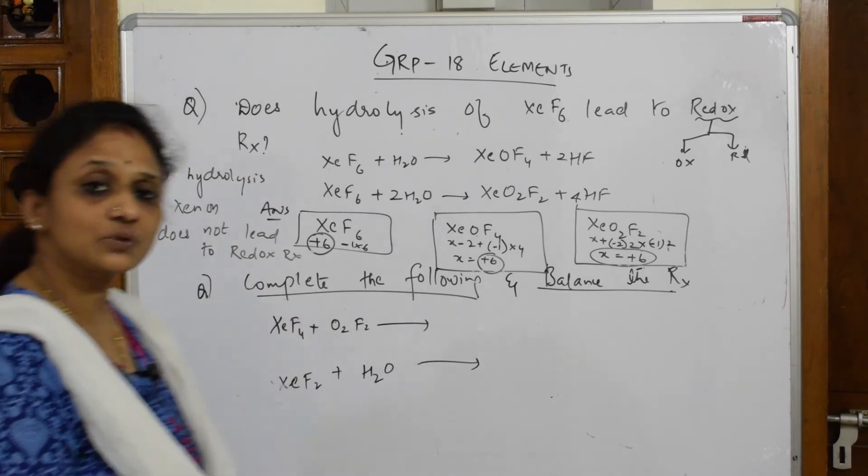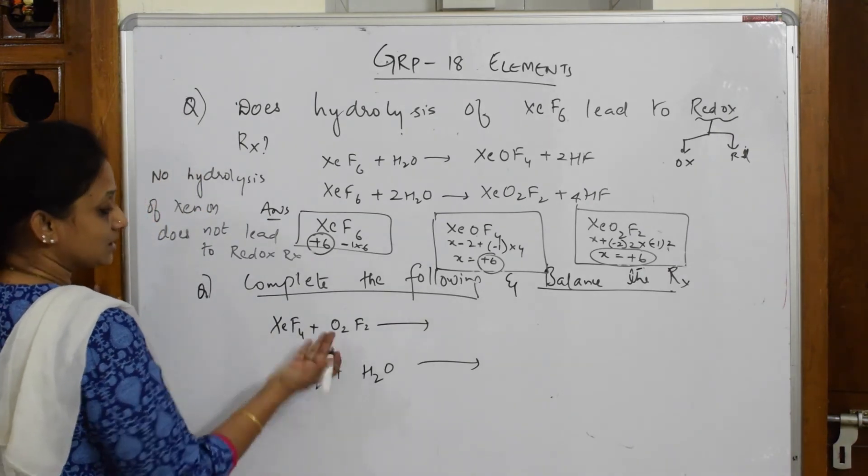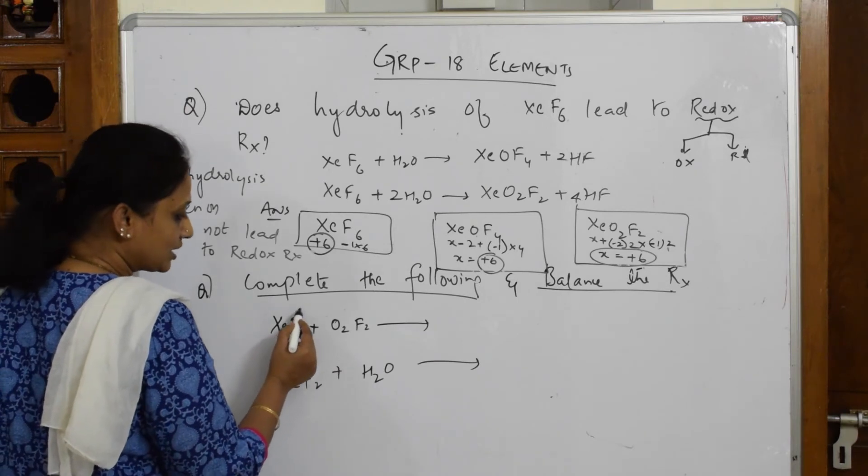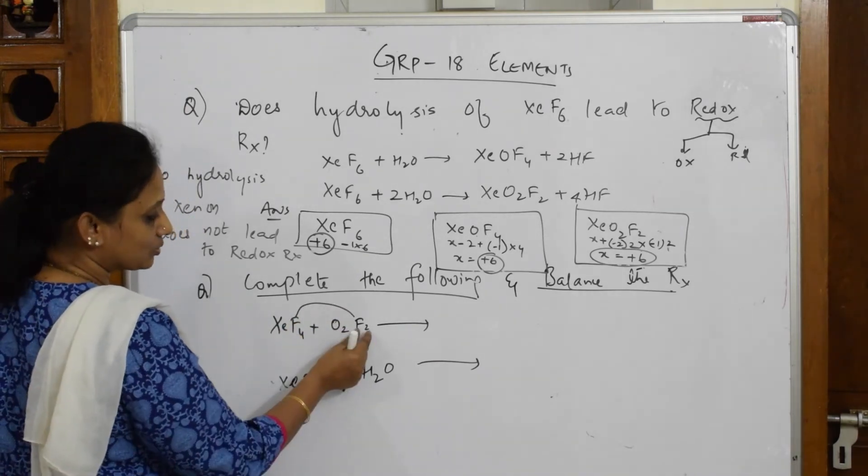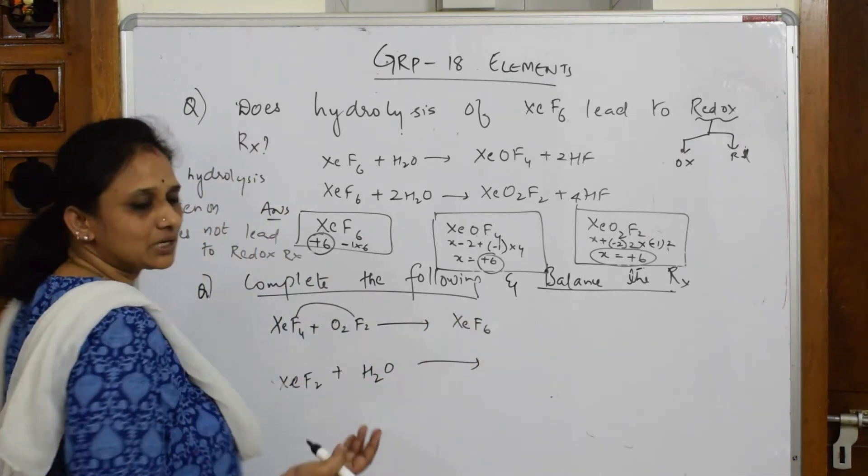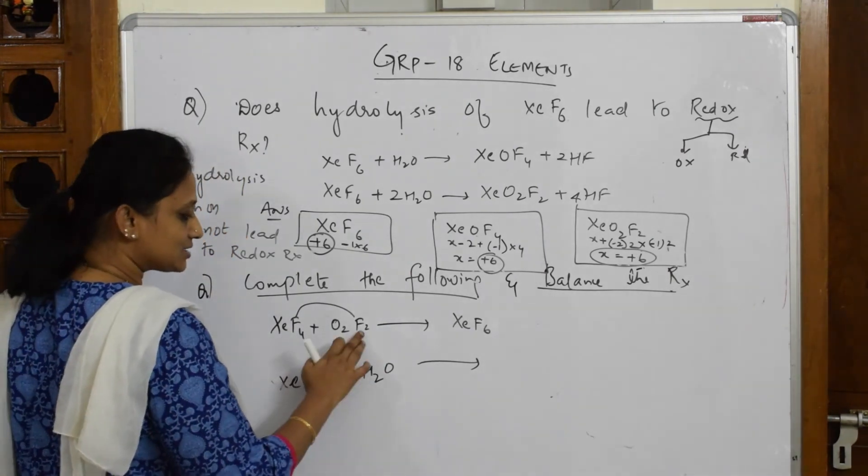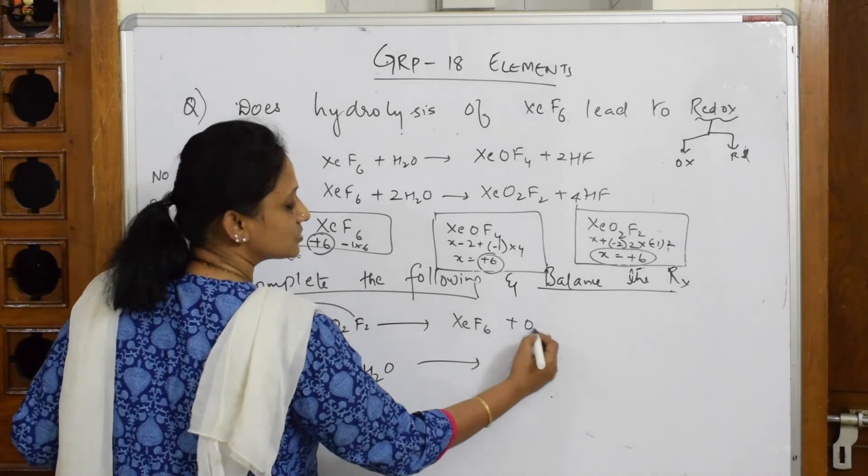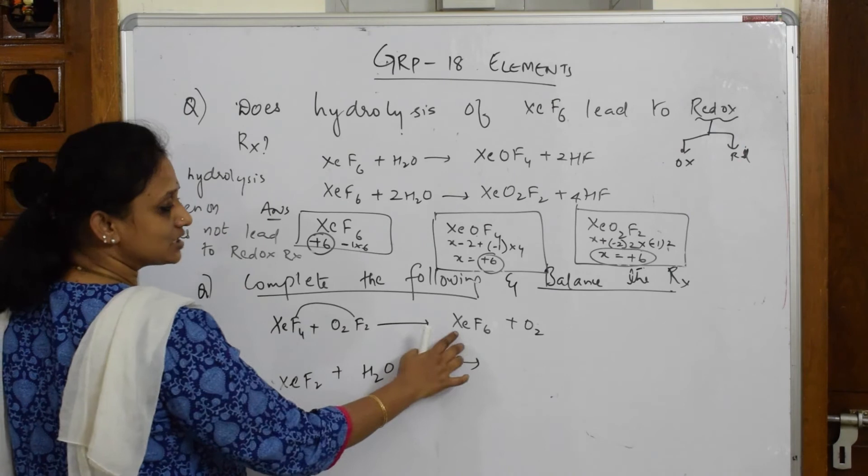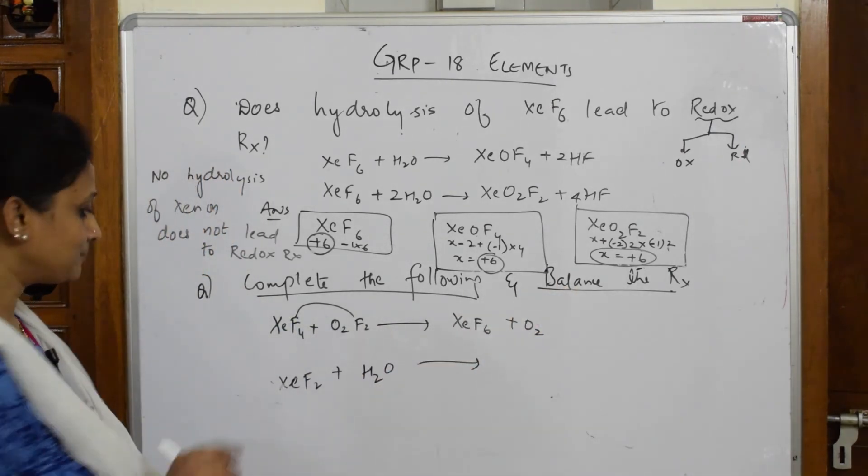Let us come back to this. Such questions are quite common in inert gas compounds. Complete the following. Now see here, this is XeF4 and O2F2. Simple - try to add this here, completely add or take this fluorine and add here. What do you get? XeF6. Try to add this and the leftover is oxygen. Total: XeF4 plus O2F2 gives 2XeF6 plus O2. Xenon is balanced because they asked me to balance the reaction.